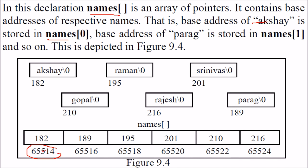Now this array of pointers is containing the address of 182 and 182 address Akshay is stored. Again when we go to this 65516, this is an array which is having the address, this is array of pointers and this 189 is pointing to Parag. I hope you got the idea, this is not containing any name, these are containing the address of the names.